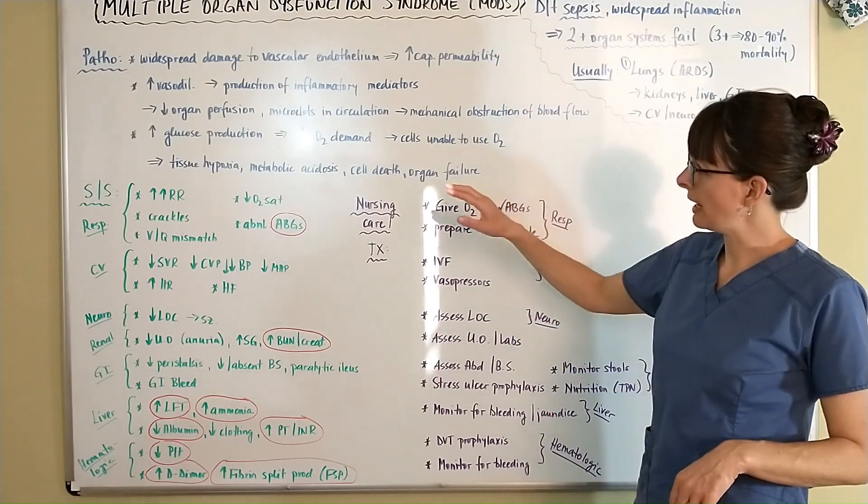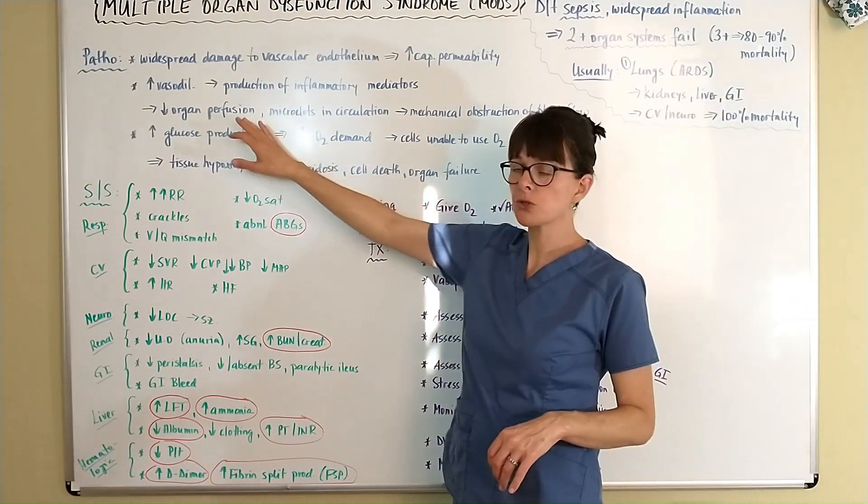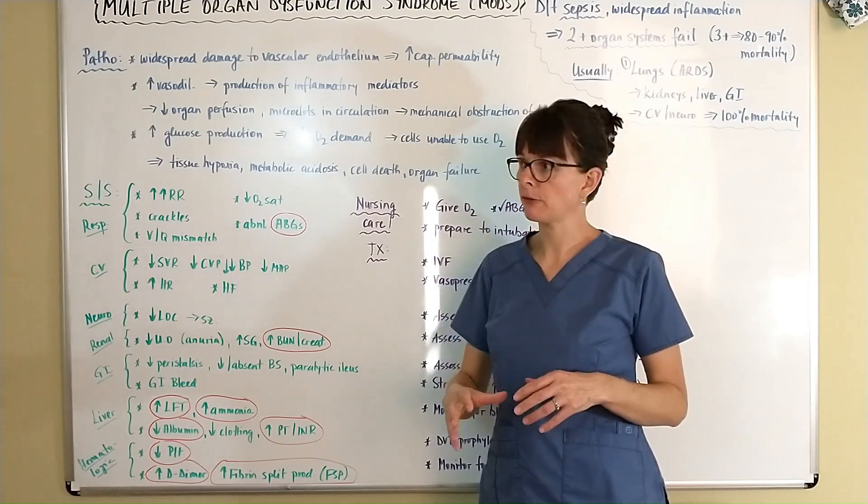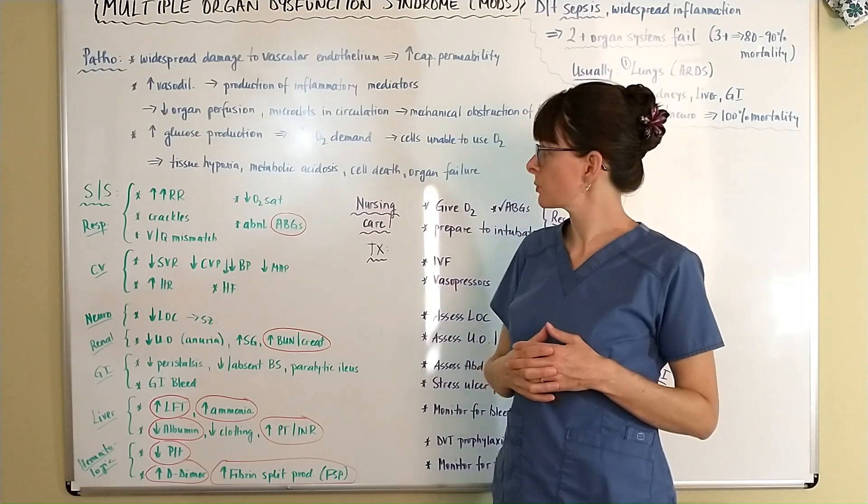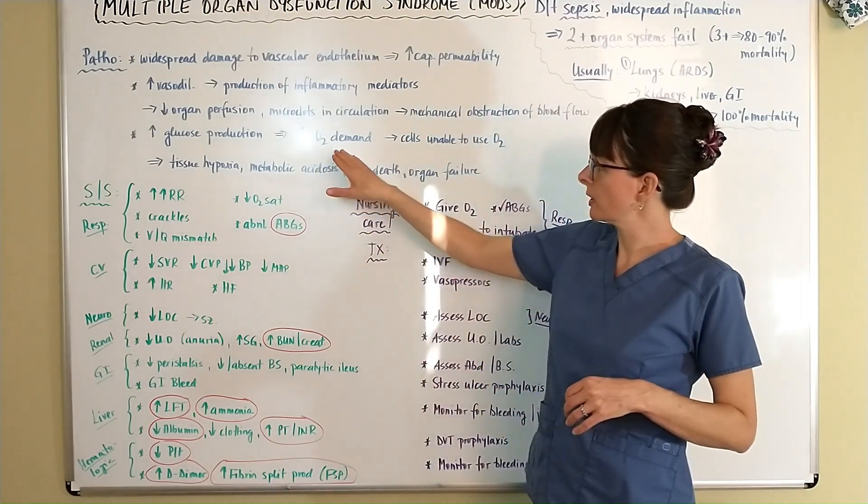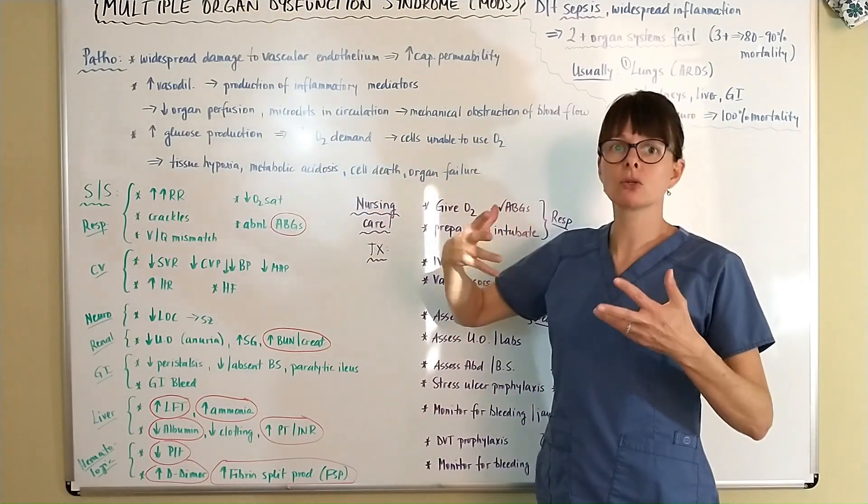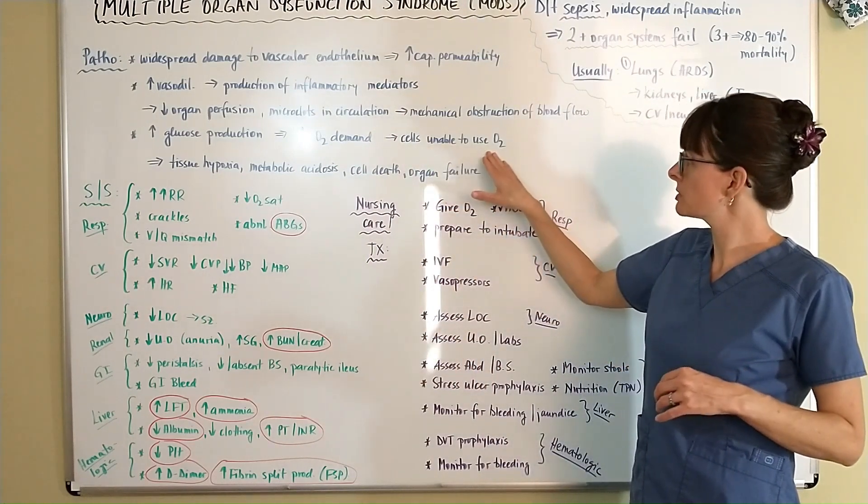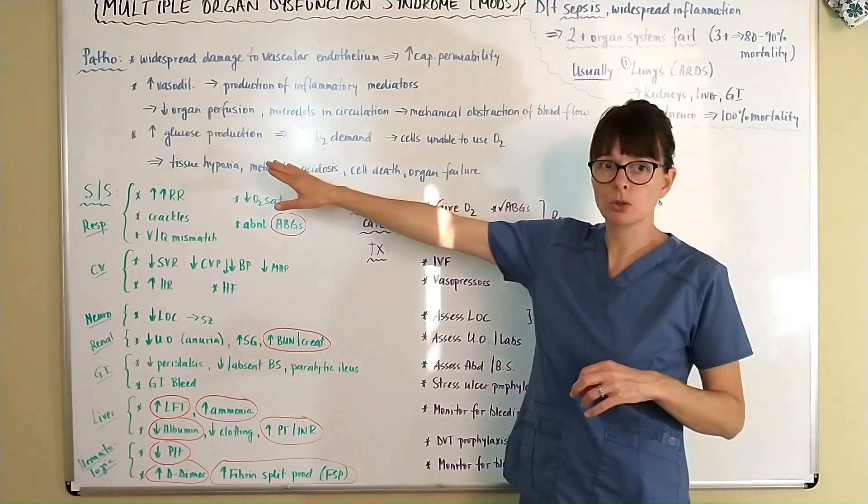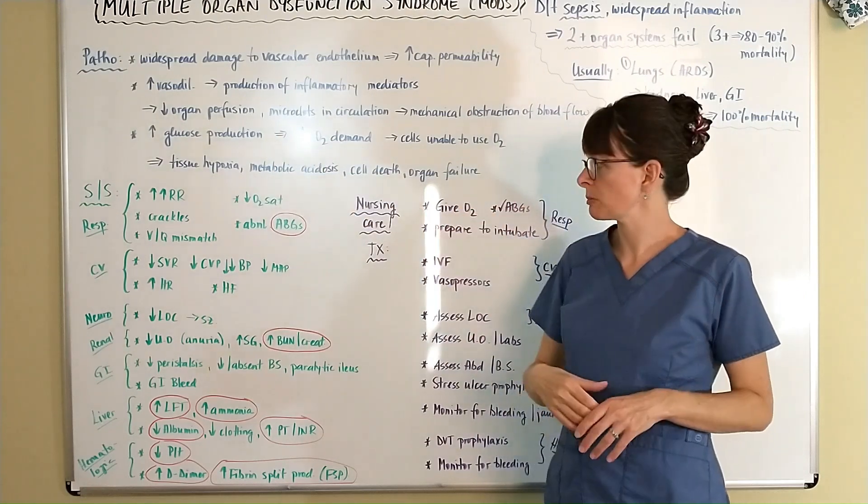Now because we have this decreased organ perfusion, the body kind of goes into a state of panic and produces more glucose because of the stress response which leads to increased oxygen demand because the glucose has to come from somewhere and then the cells are unable to use the O2 because it goes into this glucose production into the stress response.